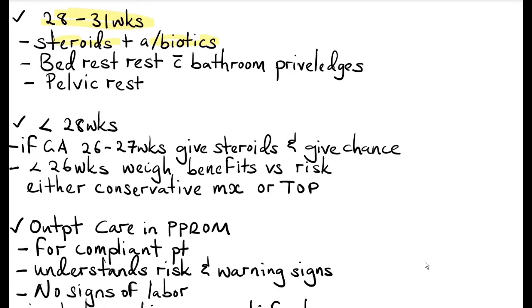If the patient is between 28 to 30 weeks gestational age, this is a small pregnancy. You give steroids and antibiotics and advise bed rest with bathroom privileges, as you don't want the patient moving around too much — they will be losing amniotic fluid and there is risk of cord prolapse. There should be a bathroom nearby to minimize movement.